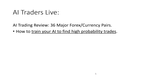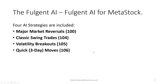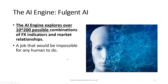We're going to look at four particular trading strategies: major market reversals, classic swing trades, volatility breakouts, and quick three-day moves. We'll be using genetic algorithms to come up with high probability trading strategies using artificial intelligence.